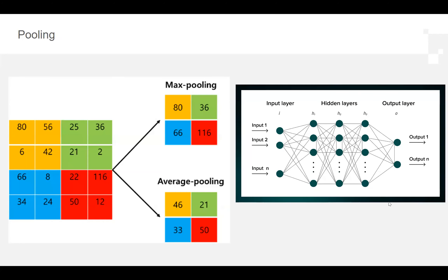Pooling is a simpler step. The two main methods are max pooling and average pooling. Max pooling works by taking the largest pixel value from each region — for example, from a yellow square, 80 is the largest so it outputs 80; from a green square, 36 is the largest so it takes 36. Average pooling works similarly but instead finds the average value by summing all numbers in a region and dividing. Both convolution and pooling together help reduce the image to its most essential features.